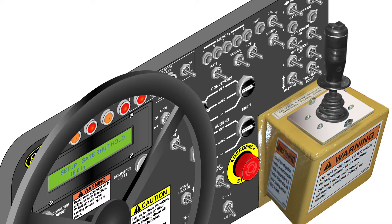This screen is used to set the delay of the right gate close on a variable width hopper. This value should be set to around 18.0 inches. The computer will wait until the chip spreader travels an additional 18 inches before the right gate will close. The left gate is not affected by changing this number. Use the cal switch to adjust the delay to achieve a straight finishing line. The right spread roll delay will adjust with the gate hold setting. Push the scroll switch down to move to the next screen.